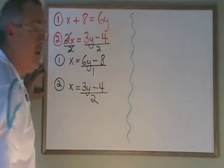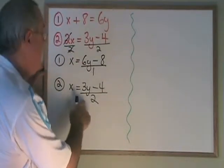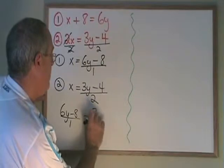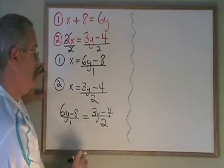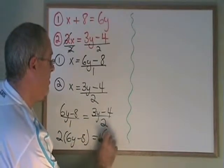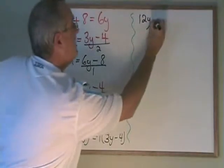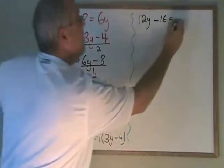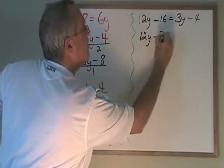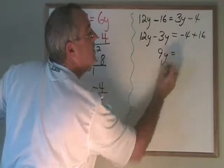Let's compare these two equations by making what x is equal to in one of them equal to what x is equal to in the other. 6y minus 8 over 1 equals 3y minus 4 over 2. Cross multiplying, 2 times 6y minus 8 equals 1 times 3y minus 4. Moving the y's to the left and the numbers to the right, 12y minus 3y equals negative 4 plus 16. 9y is equal to 12.